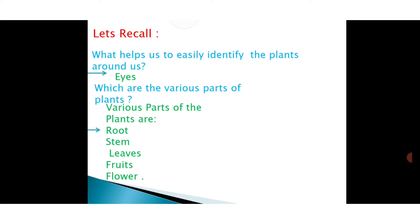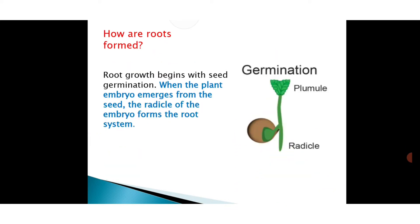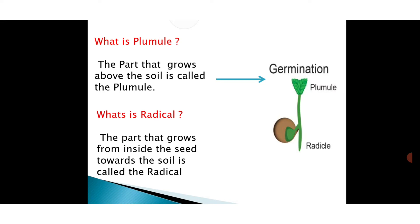Various parts of plant: root, stems, leaves, fruits, flower, and how roots are formed. This is the seed germination image. What is plumeal? The part that grows above the soil is called the plumeal. What is radical? The part that grows from inside the seed toward the soil is called the radical. This we studied in the previous video.